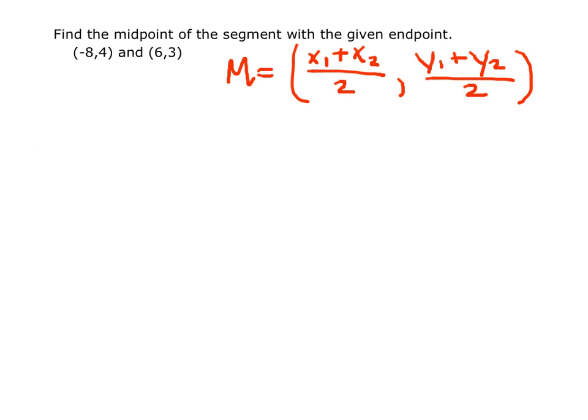So plugging our coordinates into this formula, we add our x's. So we have negative 8 plus 6, all divided by 2, and 4 plus 3, divided by 2.